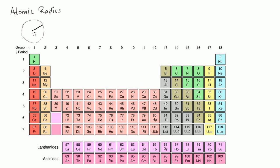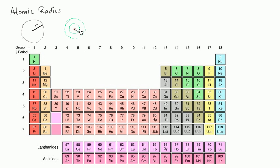So the length of this line right over here would be the radius. A lot of people, when they conceptualize an atom, imagine a positive nucleus with protons in the center, and then electrons in fixed orbits around that nucleus — some electrons in an inner orbit, and a few more in an outer orbit. And you might say, well, that's easy — I just figure out the distance between the nucleus and the outermost electron, and call that the radius.